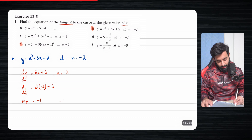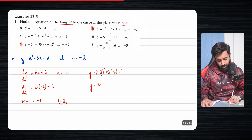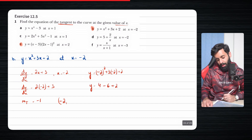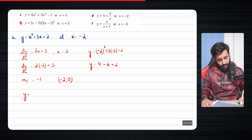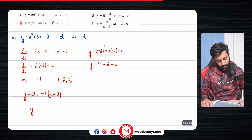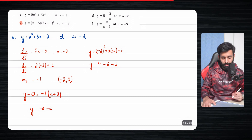Next, you want to find the y-coordinate since you have the x-coordinate. So plug in x = -2: minus two squared plus three into minus two plus two. So y equals four minus six plus two. Four minus six is minus two, and minus two plus two is zero. Now write: y minus zero equals minus one into x minus minus two, which becomes plus two. So you have y equals minus x minus two, and that is the final correct answer.